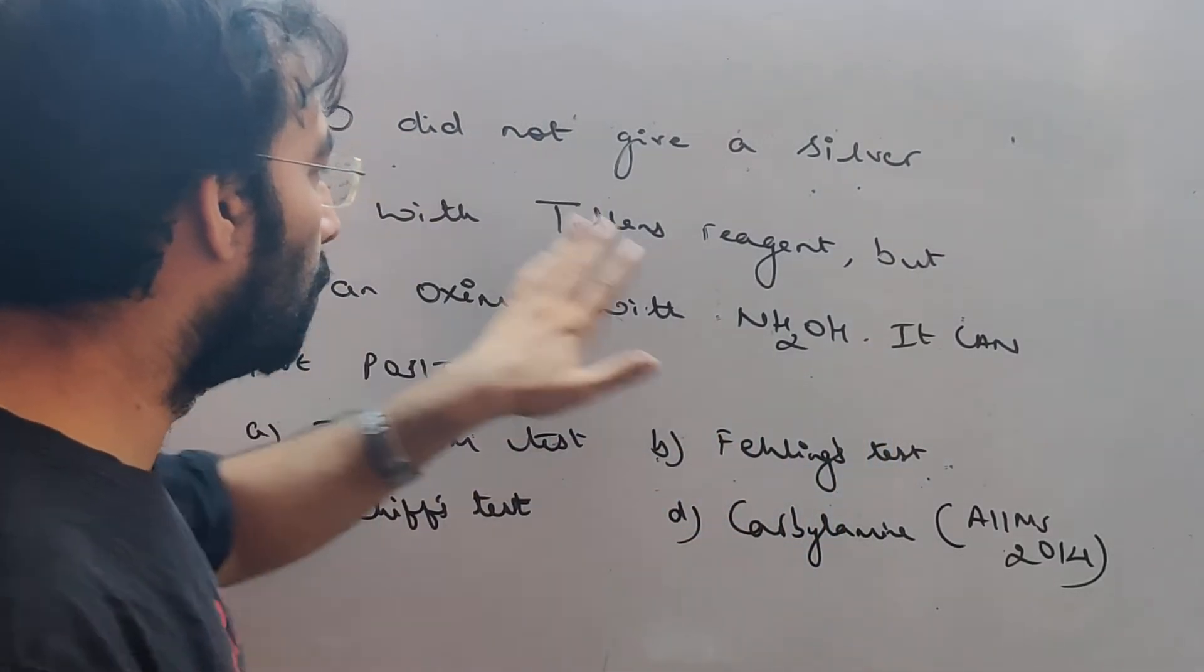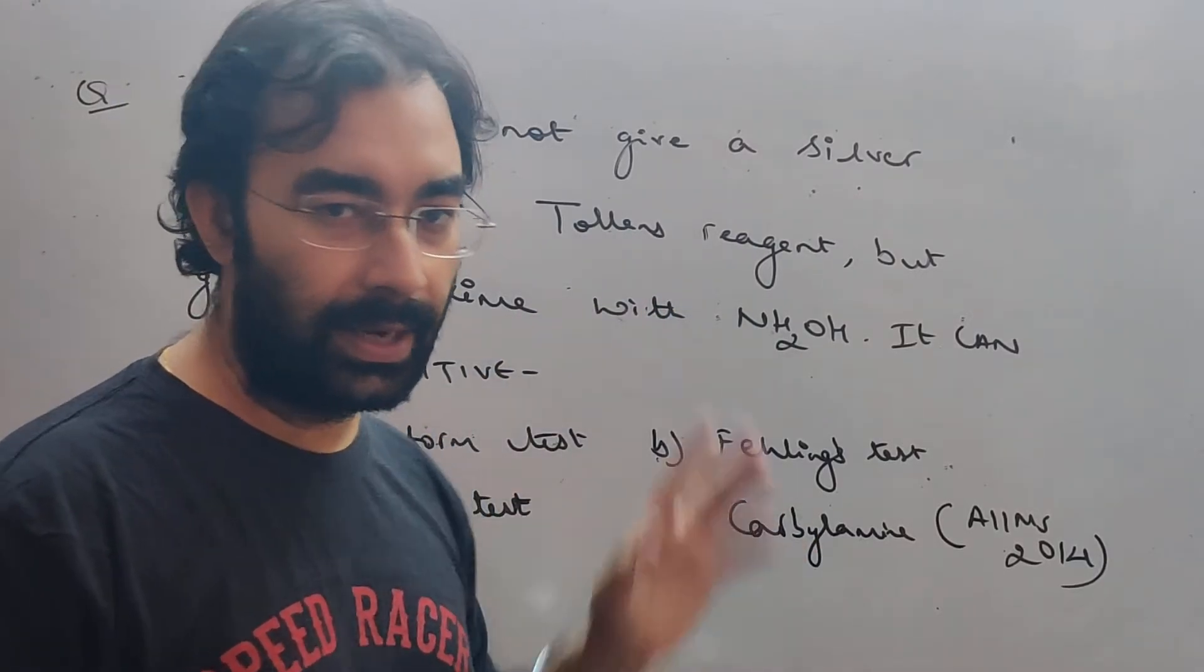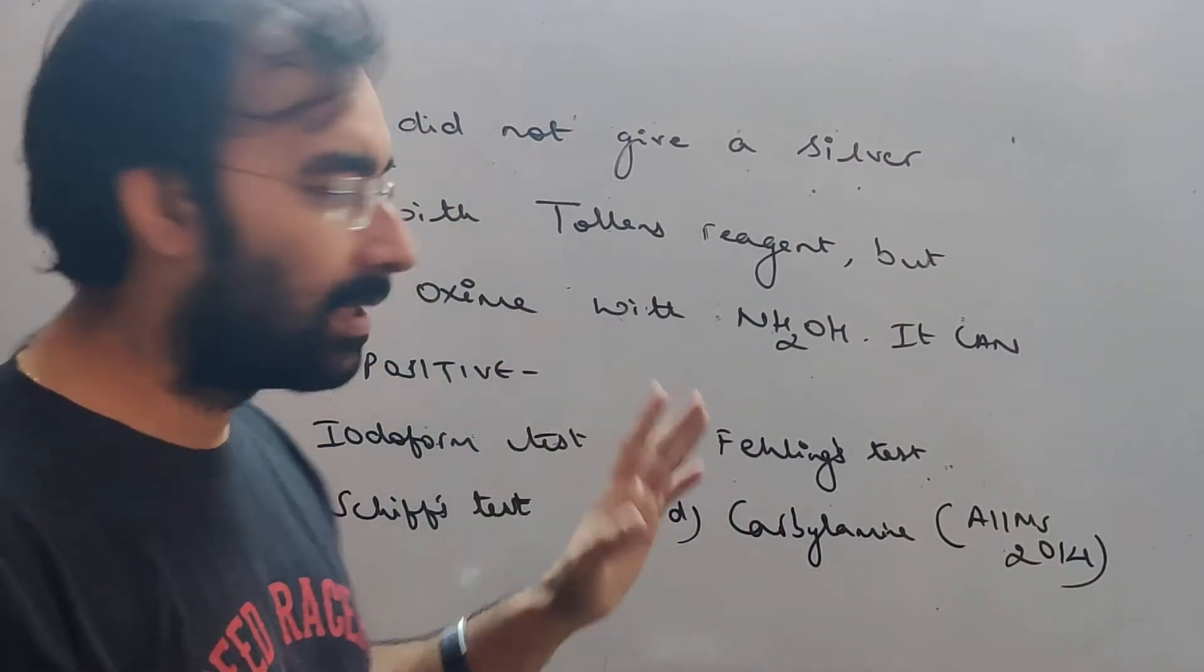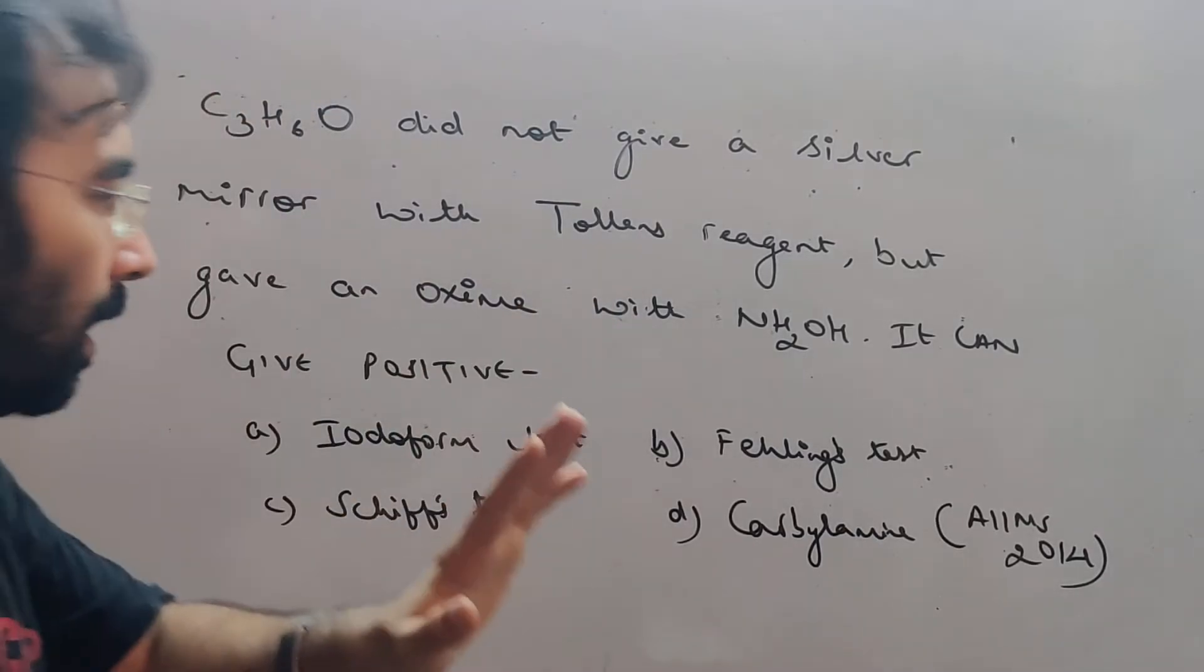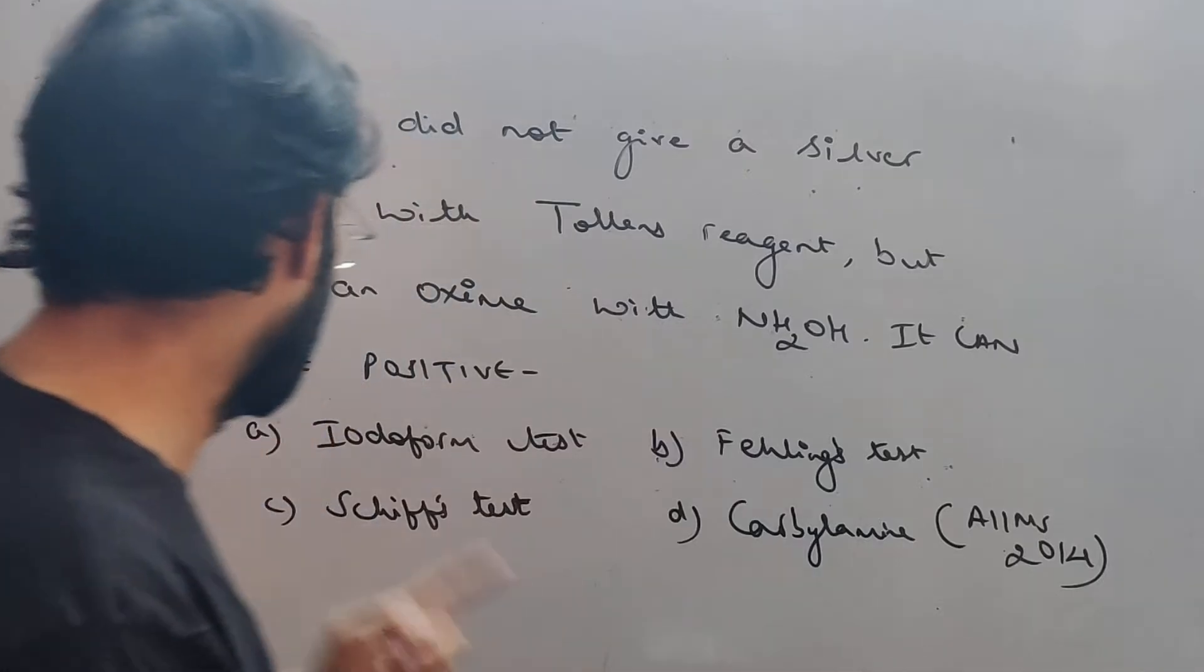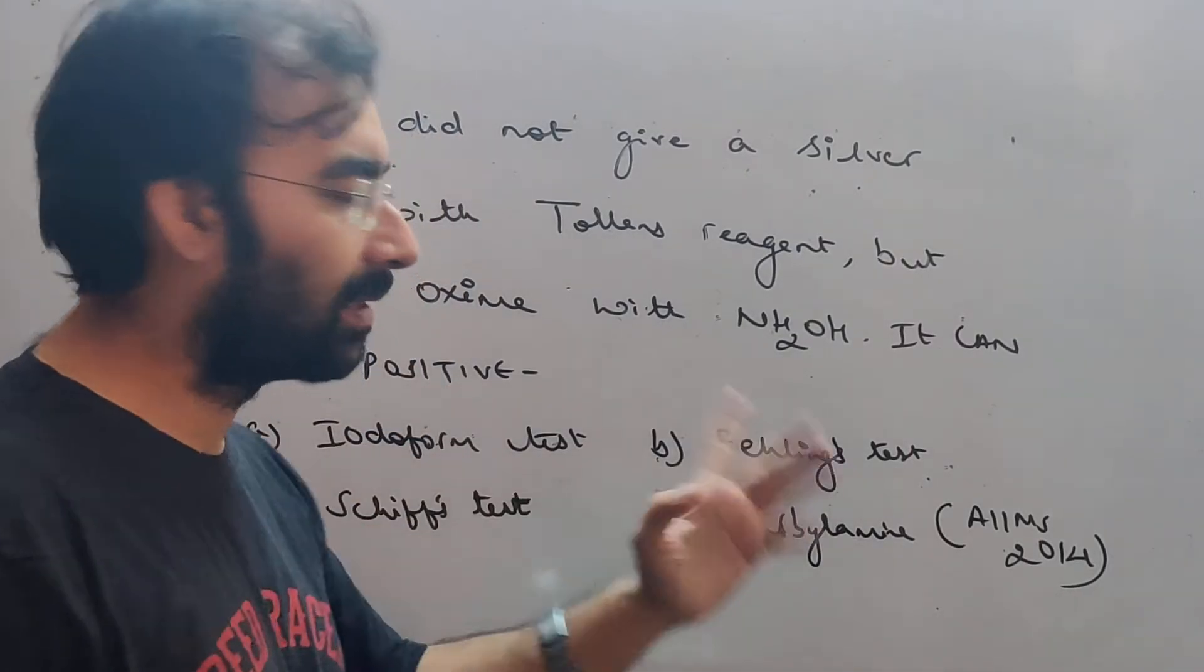If this is aldehydes, then the Tollen's reagent gives us a test. It does not give us a ketone. This means that there is a surety here that there is a ketone. Now it has asked if it can give positive, which ketones can give it?